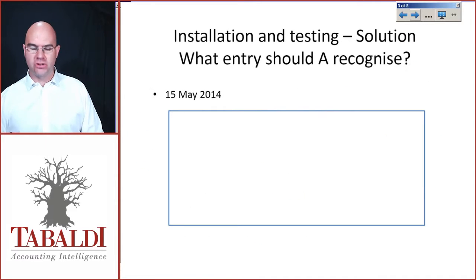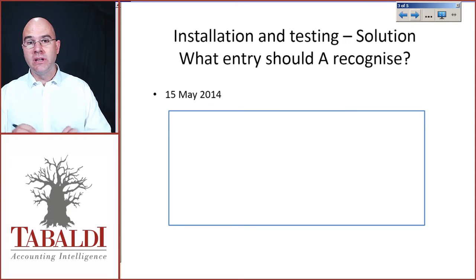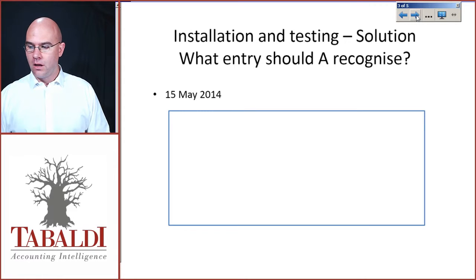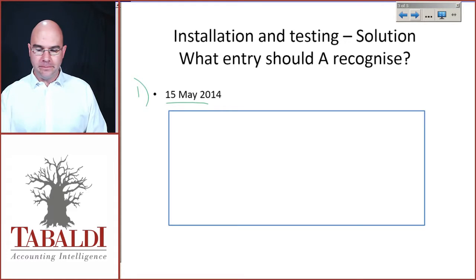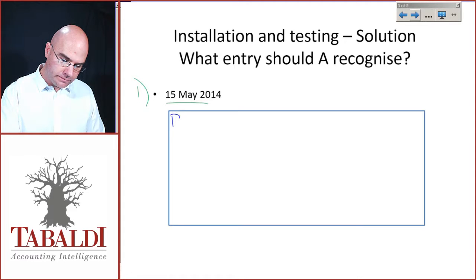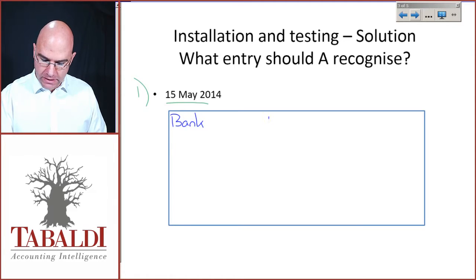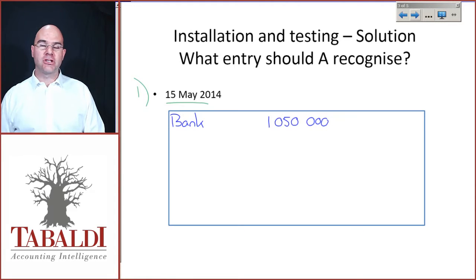I've set out some space, but I want you to push pause and try to do this journal first. Assuming you've done the journal: on the 15th of May, required number one, we're going to debit bank with the full amount we are receiving, namely $1,050,000. We receive that cash on the 15th of May either way.